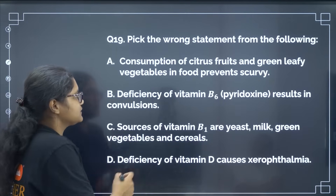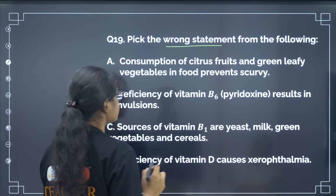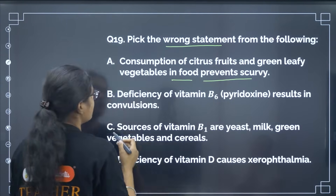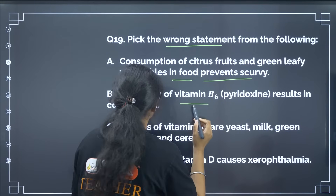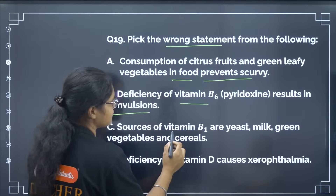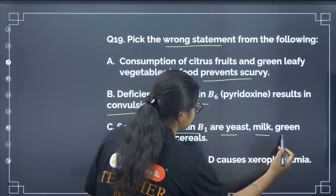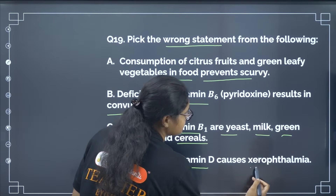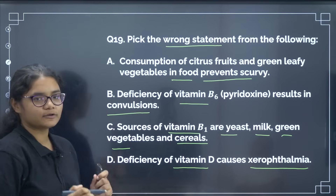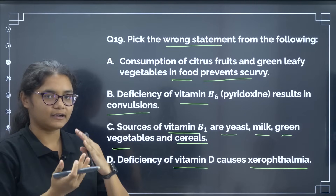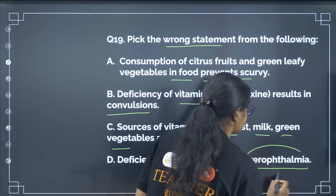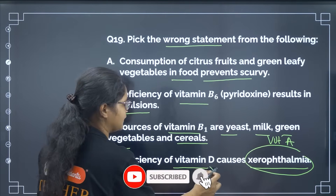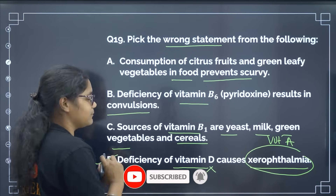Pick the wrong statement: consumption of citrus food prevents scurvy; deficiency of vitamin B6 results in convulsions; sources of vitamin B1 are yeast, milk, green vegetables and cereals; deficiency of vitamin D causes xerophthalmia. Xerophthalmia is actually caused by deficiency of vitamin A, not vitamin D. So the correct answer — the wrong statement — is option number D.